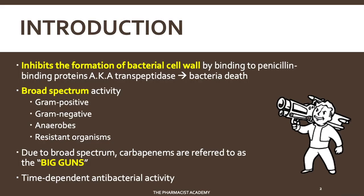Just like all beta-lactams, carbapenems inhibit the formation of the bacterial cell wall. They do this by binding to the penicillin binding protein, also known as transpeptidase. This protein is responsible for building the bacterial cell wall — when the bacteria has a cell wall, it's good for its structure and holds everything in place. So once you inhibit the formation of this, it leads to bacterial death.